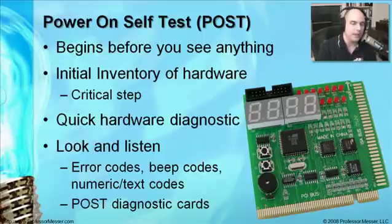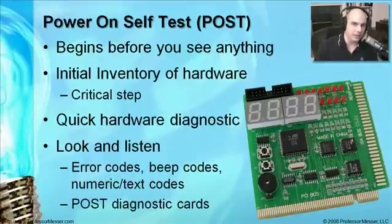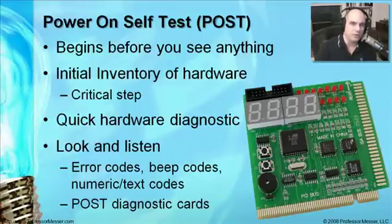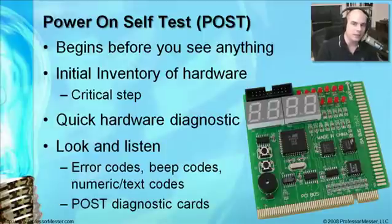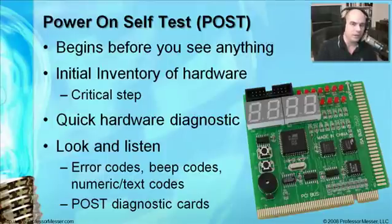If the BIOS doesn't see a piece of hardware during the Power On Self-Test, your operating system is absolutely not going to see it either. So one of the first troubleshooting steps when Windows isn't seeing a hard drive or CD-ROM is to ask: does your BIOS see it? You can shut down, turn the system back on, and enter the BIOS using F2, Delete, or the appropriate key to see what hardware the BIOS detects.